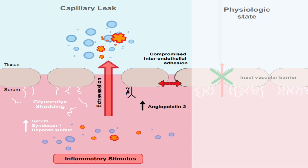In the capillary leak state, shown on the left side of the image, an inflammatory stimulus triggers a cascade leading to glycocalyx shedding — the protective layer covering the endothelium begins to break down — releasing components like SYNDECAN1 and heparin sulfate into the bloodstream. Extravasation occurs as fluid and proteins leak from the blood vessels into surrounding tissues, resulting in swelling and tissue damage. Compromised inter-endothelial adhesion allows larger gaps for fluid to escape, and ANGIOPOIETIN2, depicted as interfering with the TIE2 receptor, plays a crucial role in further weakening the endothelial barrier, increasing the likelihood of fluid leakage.